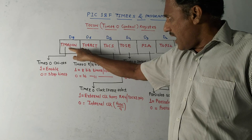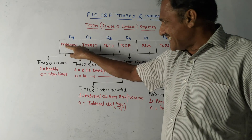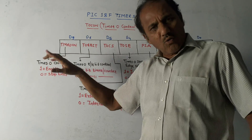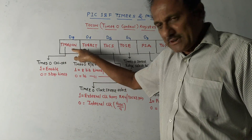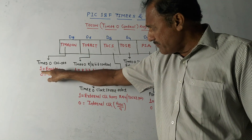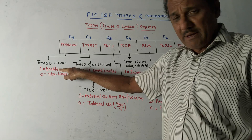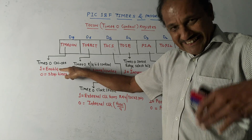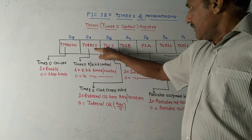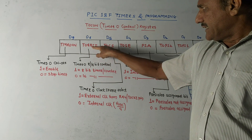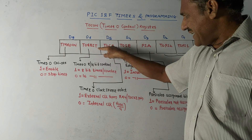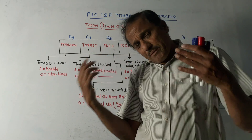Let us discuss the Timer 0 control register contents. The first bit, the MSB bit d7, is TMR0ON - that is Timer 0 On. This bit gives information whether Timer 0 is on or off. If this bit is 1, it indicates Timer 0 is on, that is it is enabled. 0 indicates the timer is not on. The next bit d6 is T08BIT - Timer 0 8-bit.